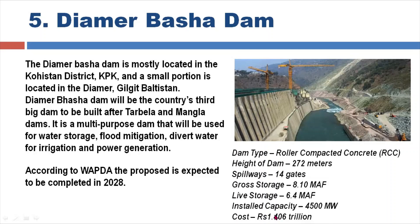The cost of the Diamer Basha Dam project is 1,400 billion rupees, representing the total money being spent on this project.